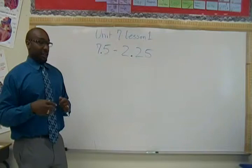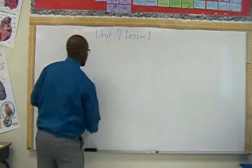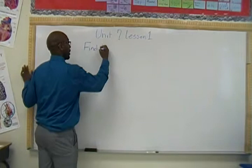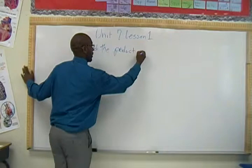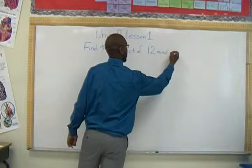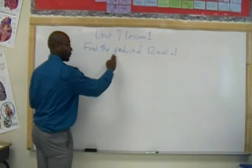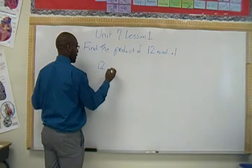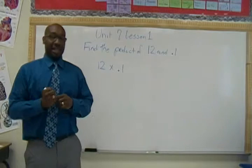The other thing they do is give you the word form and want you to turn it back into number form. So let's say it says 'find the product of 12 and one tenth.' We look for key words — 'product' tells us it deals with multiplication. So therefore, I know it's going to be 12 times one tenth.